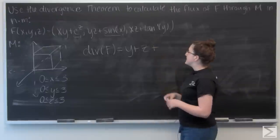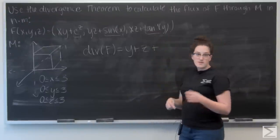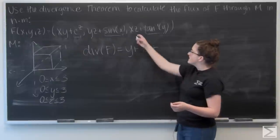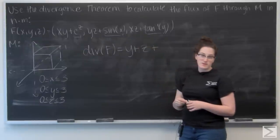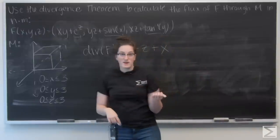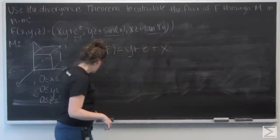Now let's check out the k component. So this time the inverse tangent of y is going to be treated like a constant, that goes to 0, and then the derivative of xz with respect to z is just going to be x. So I have x plus y plus z as my divergence for F.